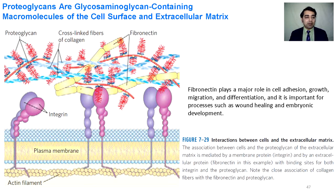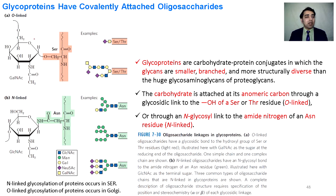In the extracellular matrix, integrin proteins are present both outside the cell and attached to actin filaments inside the cells, and are found in pairs. Fibronectin is also found in pairs and binds to integrin and many other proteins in the extracellular matrix. Proteoglycans are also present in the ECM. N-acetylglucosamine bound to the serine residue through oxygen is called O-glycosylation, while if the anomeric carbon of N-acetylglucosamine binds to the nitrogen of asparagine, it is called N-linked glycosylation.